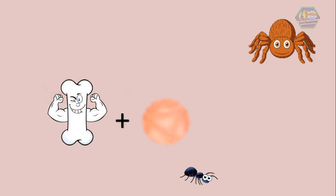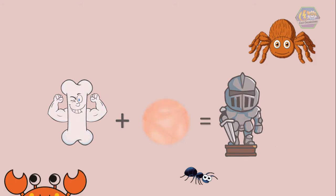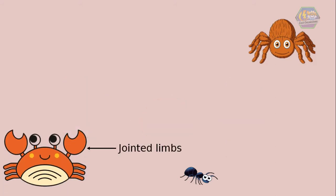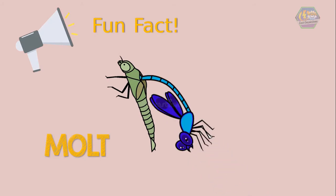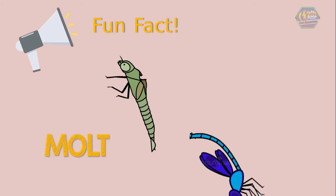They have jointed limbs. The limbs must be jointed since the exoskeleton cannot bend to allow movement. Fun fact: when arthropods outgrow their old exoskeleton they have to molt, that means leaving behind their former skin and growing a new one. It's like changing their clothes since it doesn't fit anymore. All arthropods have to do this at least once in their lives.